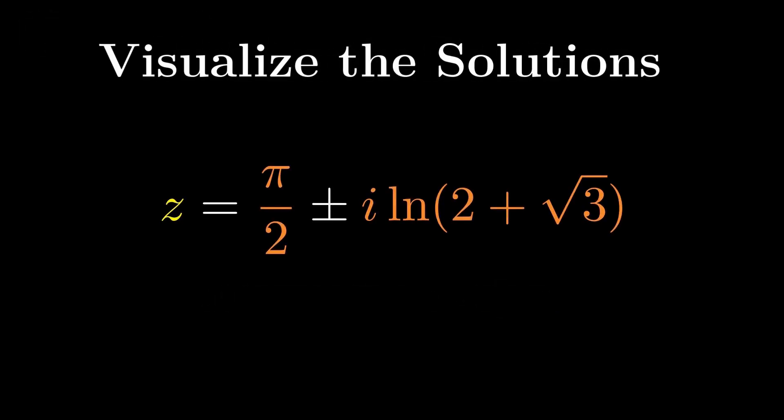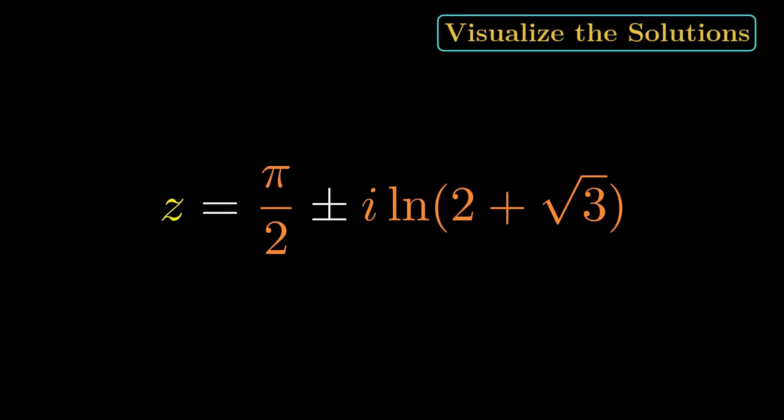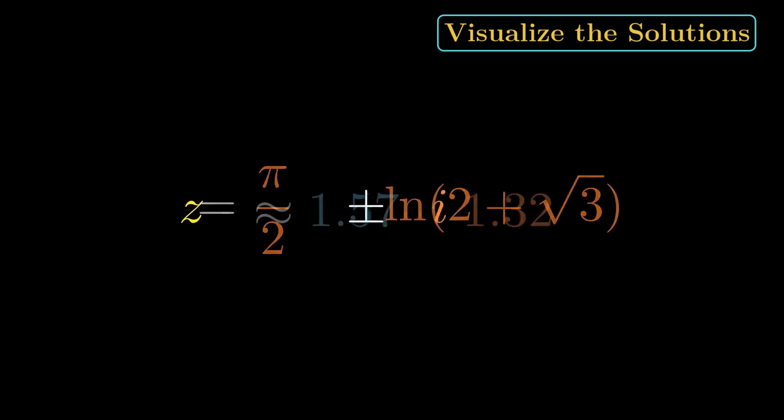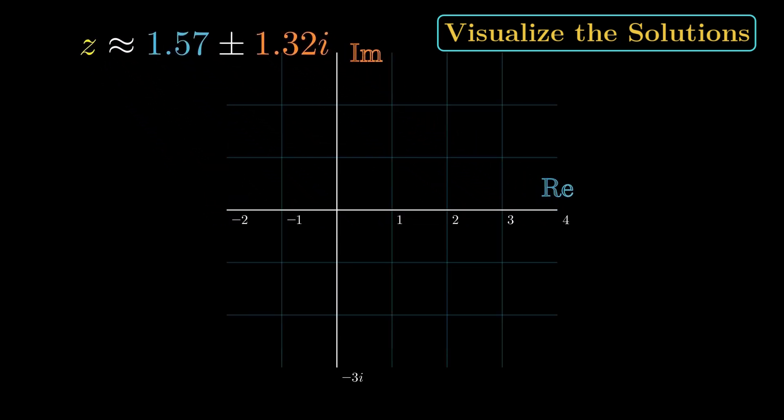z equals pi over 2 plus or minus i times ln of 2 plus root 3. Now let's visualize what that actually means. First, convert to decimals. z is approximately 1.57 plus or minus 1.32i. On the complex plane, we walk the real part first. Slide to the right until the x value hits pi over 2, about 1.57. Now the imaginary part. Go straight up by 1.32. That lands on the point 1.57, 1.32.